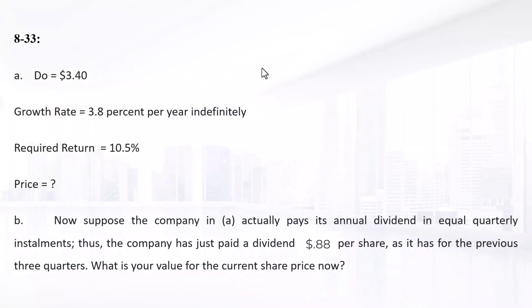Most corporations pay quarterly dividends on their common stock rather than annual dividends. Barring any unusual circumstances during the year, the board raises, lowers, and maintains the current dividends once a year and then pays this dividend out in equal quarterly installments to its shareholders.